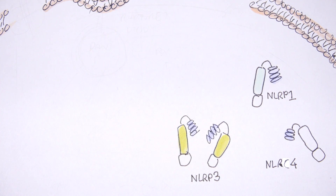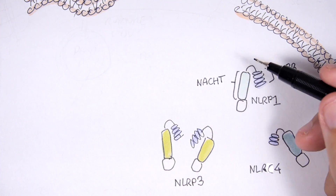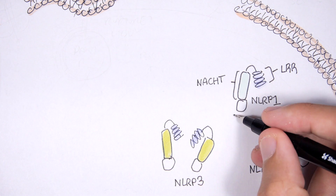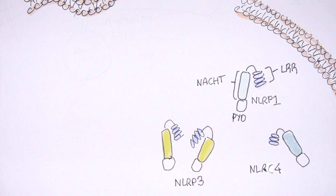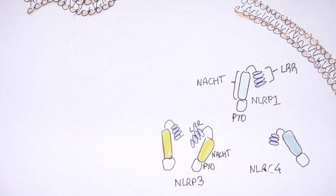These NOD-like receptors have some common structural features: they contain leucine-rich repeats, a NACHT domain, and — in the case of NLRP — a pyrin domain. This video will mostly focus on NOD-like receptor P3 because it is the best-studied one. NLRP3 has a pyrin domain because it contains a 'P', as well as a NACHT region and leucine-rich repeats.